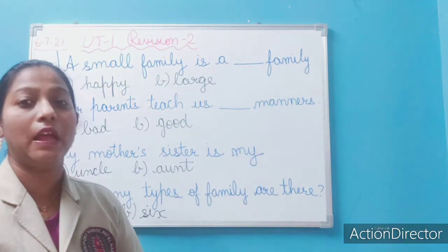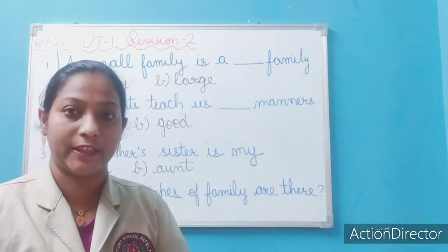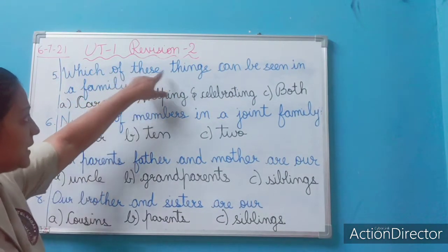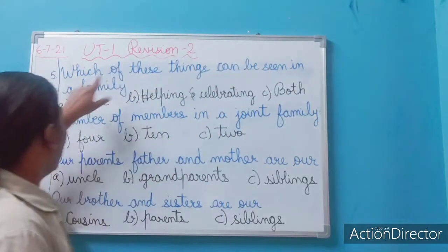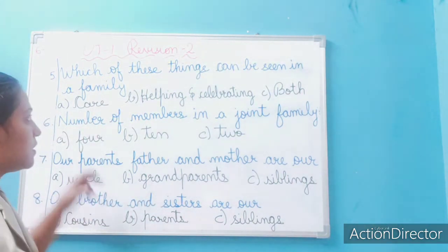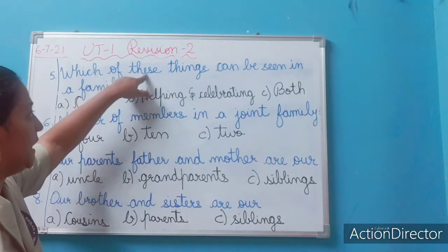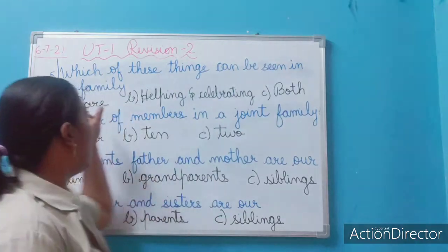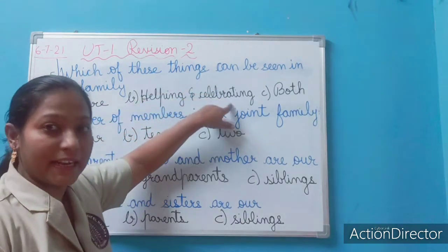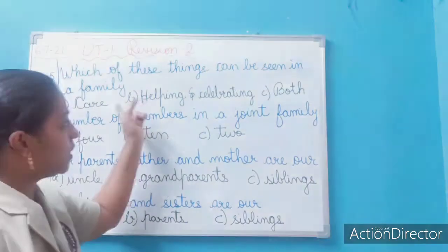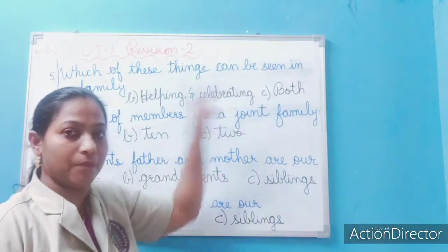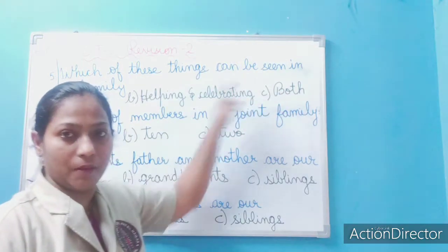Question 5: Which of these things can be seen in a family? The options are: care; helping and celebrating; or both — meaning caring, helping, and celebrating together. We can see all of these in a family, so which option covers both? Read and write the correct answer.